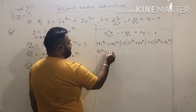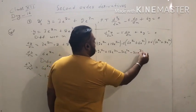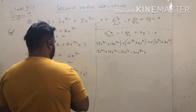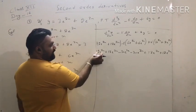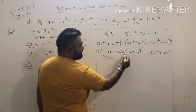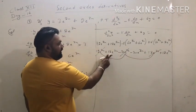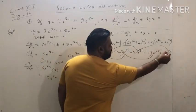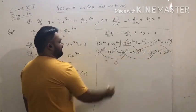Expanding: for e^(2x) terms: 12 − 30 + 18 = 0. For e^(3x) terms: 18 − 30 + 12 = 0. All terms cancel with each other, so the resultant answer is 0. Hence proved.